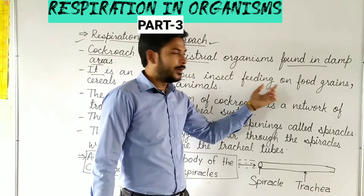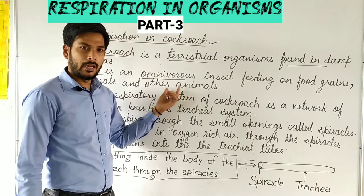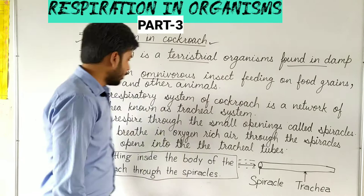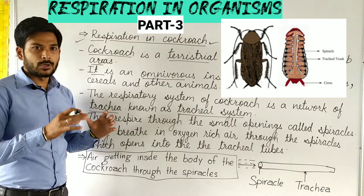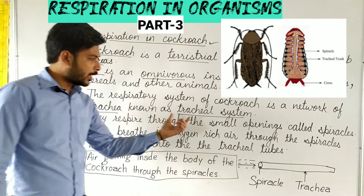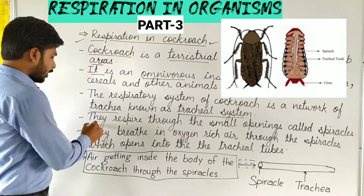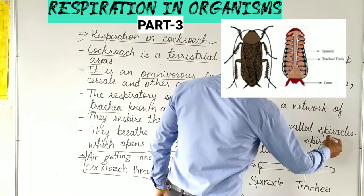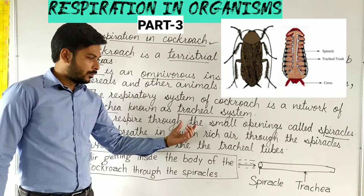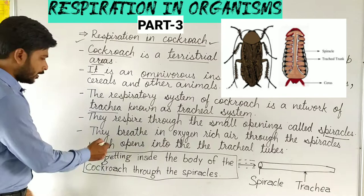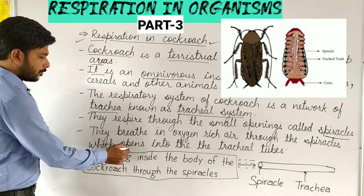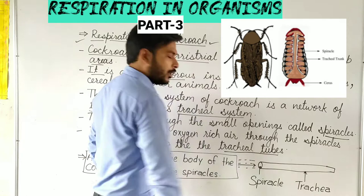The respiration system of cockroach is a network of trachea, known as the tracheal system. They respire through small openings called spiracles, which open into the tracheal tubes.